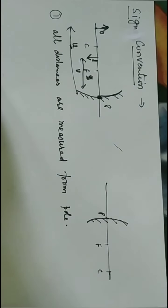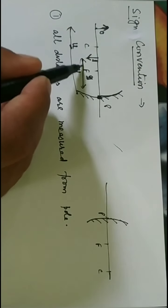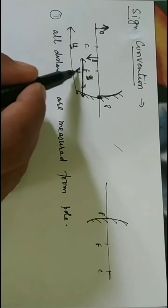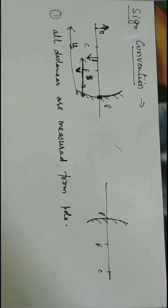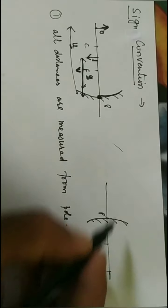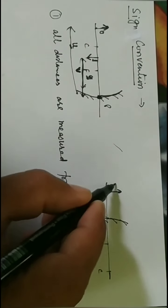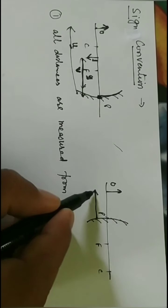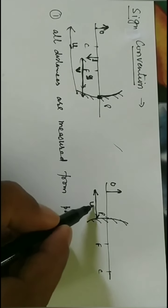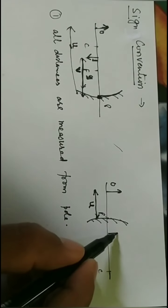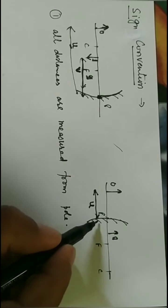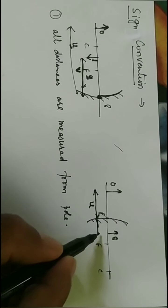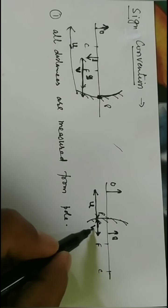We represent object distance by U and image distance by V, both measured from the pole. Similarly, if I place my object here, the distance of the object is measured from pole to object, and that distance is U. The image is formed here, and the image distance V is measured from pole to image I.